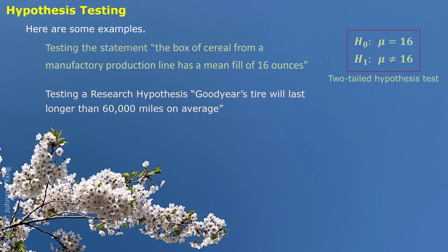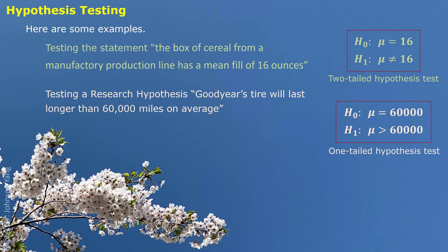The second example: if we are testing the research hypothesis that Goodyear's tire will last longer than 60,000 miles on average, we can see this tone directly — we do not consider the tire lasting less than this number. So our null hypothesis is still mu equals 60,000 miles, and we are testing whether the tire's life is longer than 60,000 miles. This is a one-tailed hypothesis test.